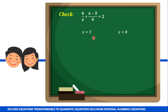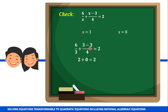Let's check x equals 3 first using our original equation. Substituting 3 for x: 6 divided by 3 plus 3 minus 3 all over 4 is equal to 2. 6 divided by 3 is 2, and 3 minus 3 is 0, divided by 4 is 0. So 2 plus 0 equals 2 — they are equal, meaning x equals 3 is a valid solution.